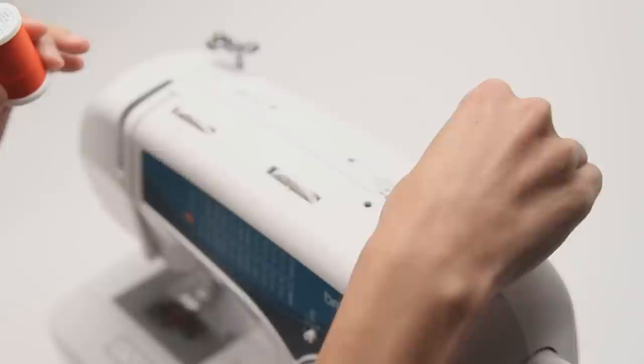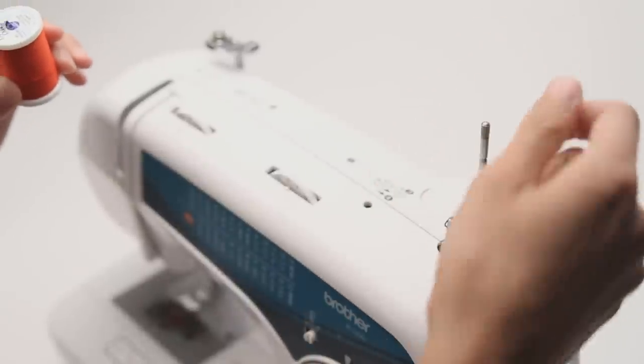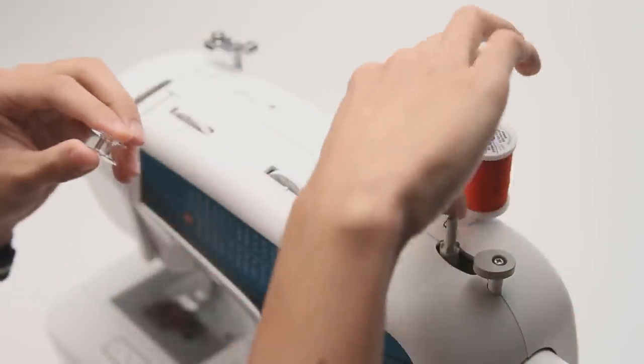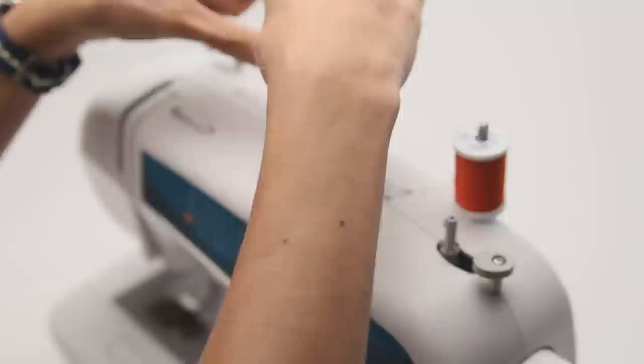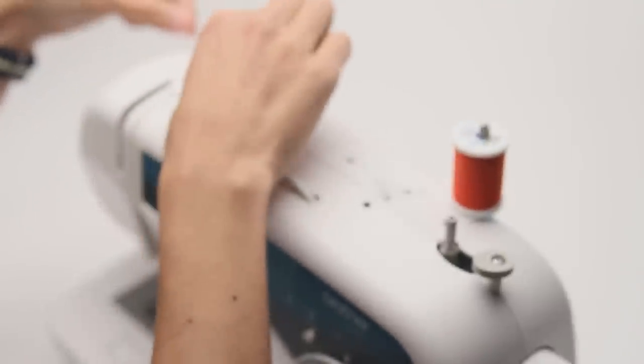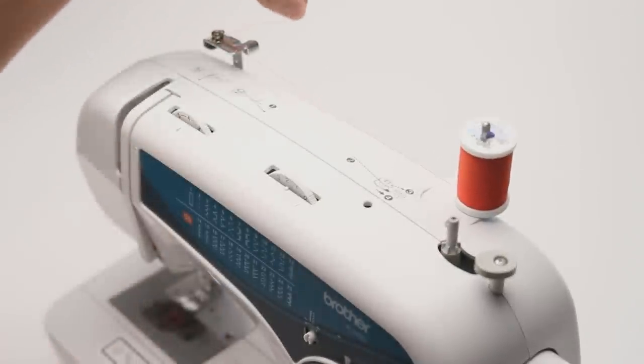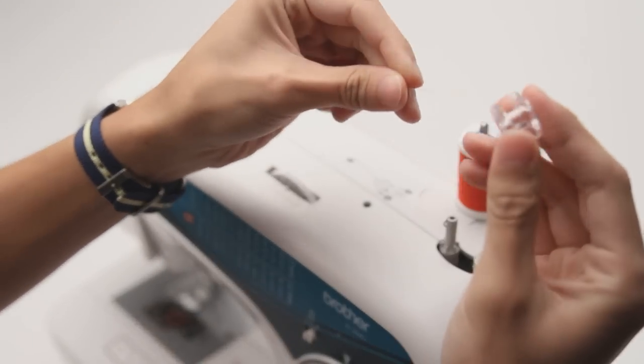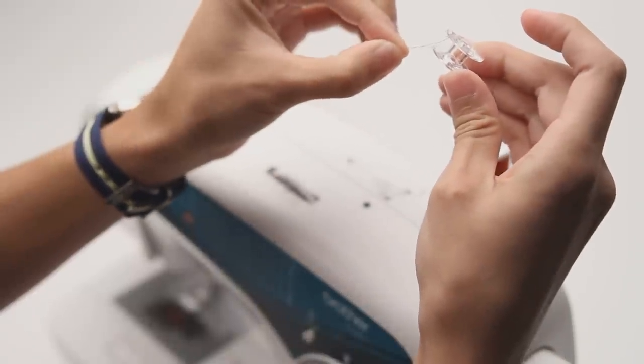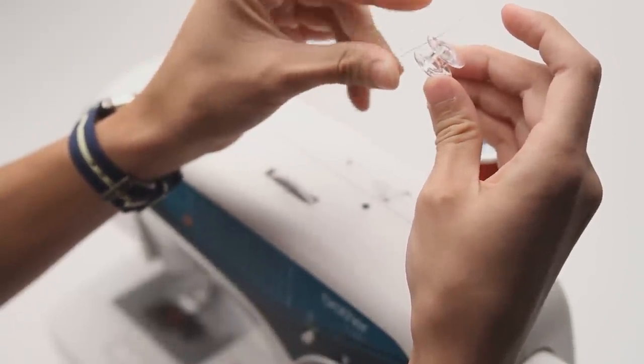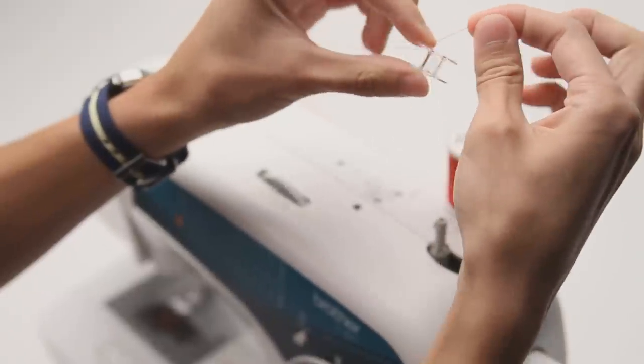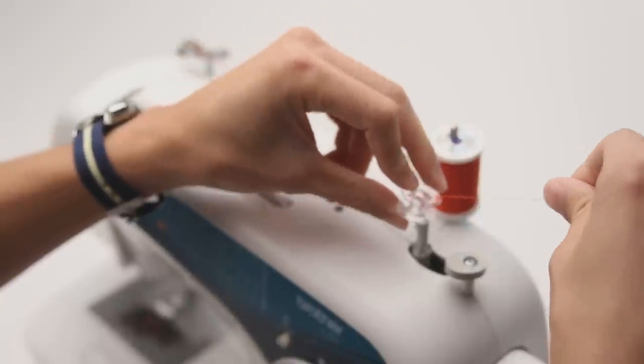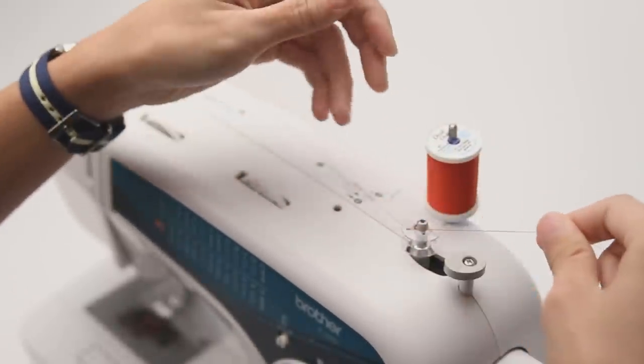So you'll take your spool pin, it's real simple, just pop this up, put your thread on top. Now you want to run this across the thread guide right here, and it goes over the front, and then cross the back, and then you'll take your bobbin, you'll run the thread right up here, and then pull it through. And you'll want to give it some slack. So, we'll just go right here, put it on here, snap it on.